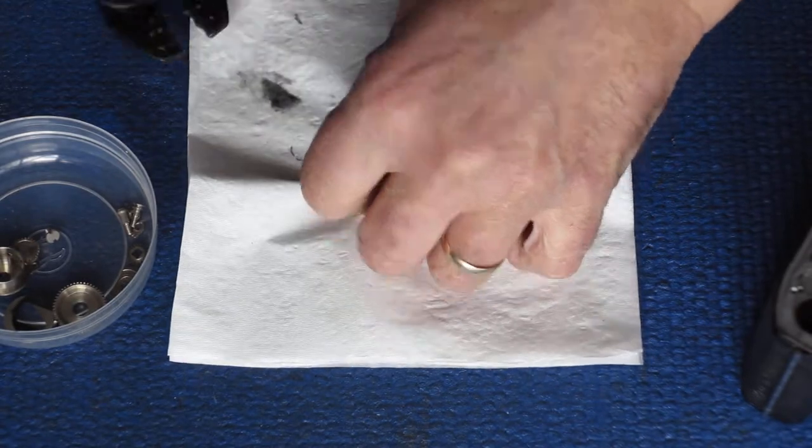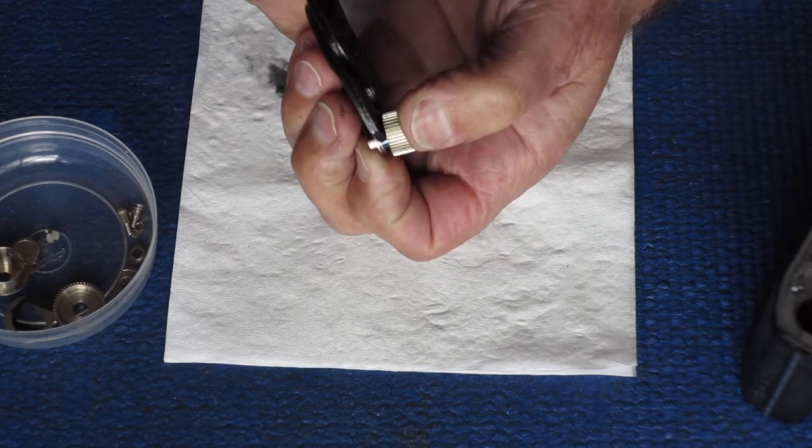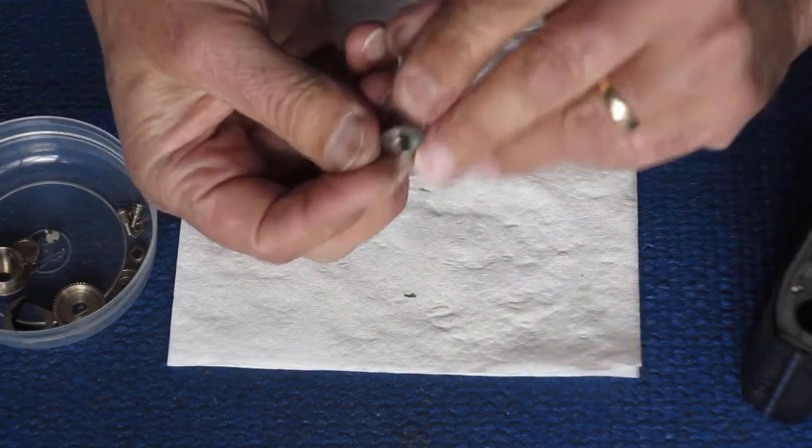And then the drum can go over the top. And with a bit of luck, we'll take away our pliers and it'll fall into place. Well it didn't of course, but it will do with a touch. Right. And there's our clutch.